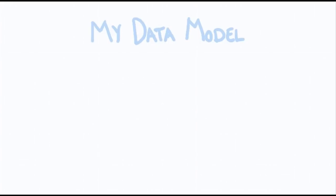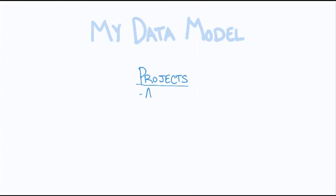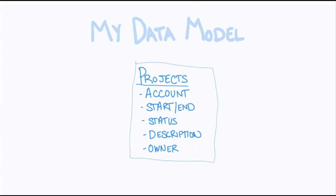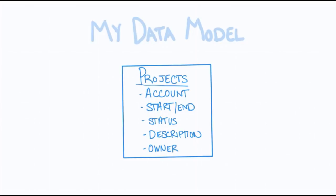When we're ready to start our data model, we want to think about what data we said we want to track. We know we want to start with Project — Project is our primary object of this app. There's information within the project we want to track: the account related to the project, the start and end date, the status of the project, and additional information like description and who owns the project. I've built out all of those core elements, which are going to be fields on the project.